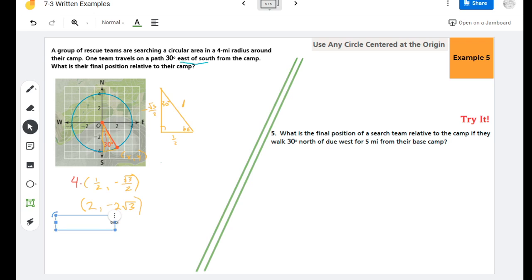If I were to describe this in a sentence, which is how we should always answer word problems, I would say the rescue team is two miles east - the two miles comes with the x-axis which is going easterly - and about 3.5 miles south of their base camp. I'm getting that 3.5 miles from doing two root three in my calculator.